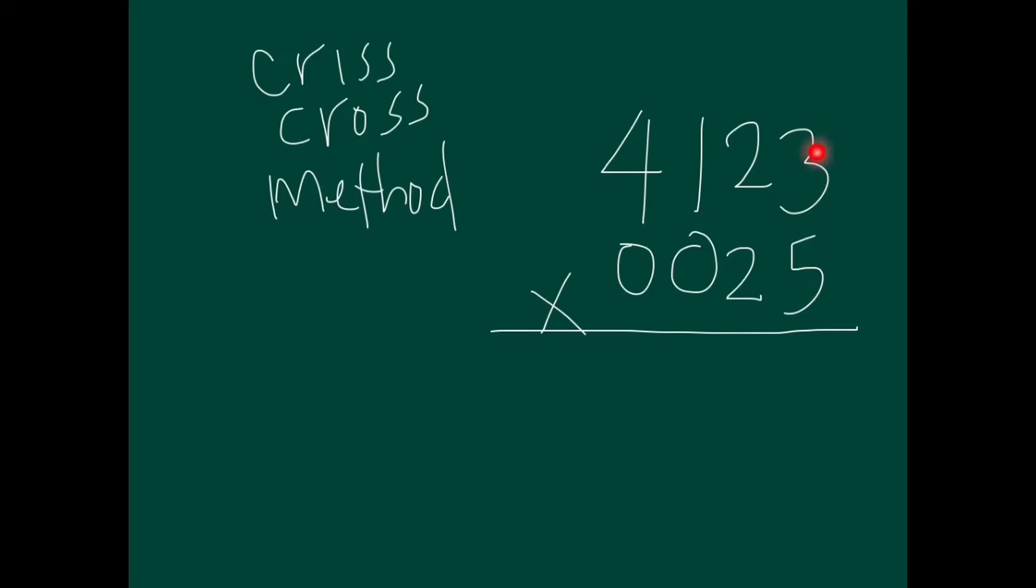Now, let's multiply five times three, that gives us fifteen, carry one over here. Next, we do criss-cross like that, two times five is ten, plus six, sixteen, plus this one, seventeen. Carry one over.